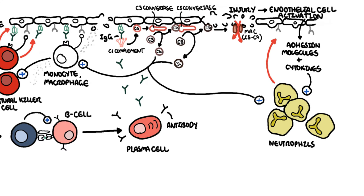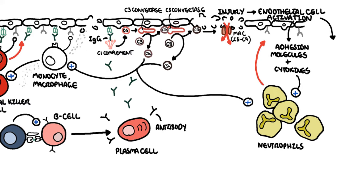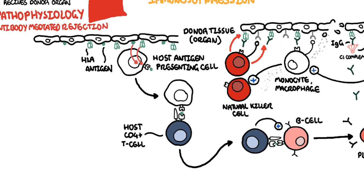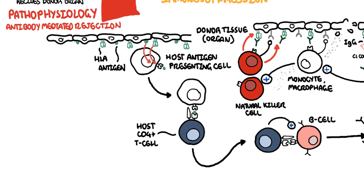Endothelial cell injury and activation leads to hemostasis, where you have platelet activation and thrombosis. Thrombosis, if uncontrolled, may lead to ischemia of the tissue due to occlusion in the blood vessel. You can see visually that antibody-mediated rejection of a transplanted organ is complicated.